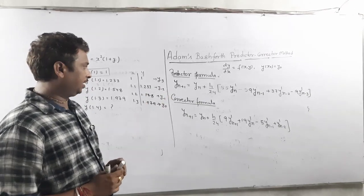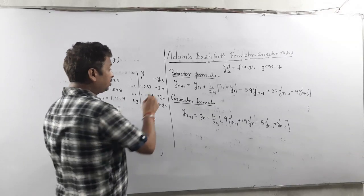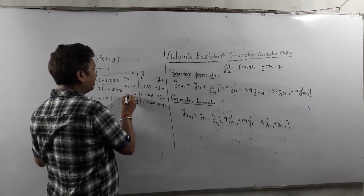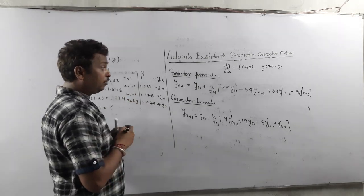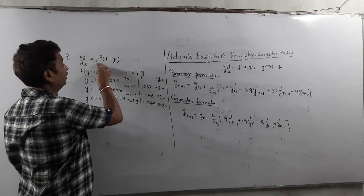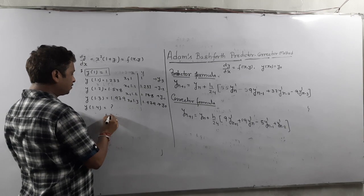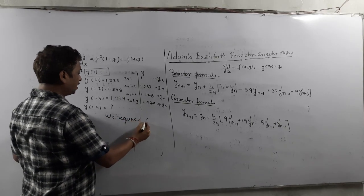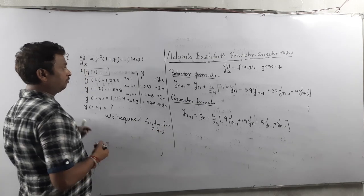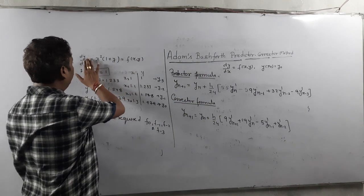We require all those values. Once you have them, you have to calculate the function values, because in the formula we have y'n — that is, the derivative. And y' means f(x,y). So we require f0, f(−1), f(−2), and f(−3). Because y-dash means f, this is what we need.